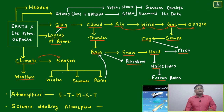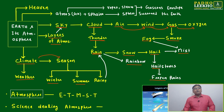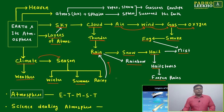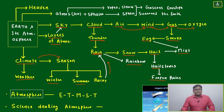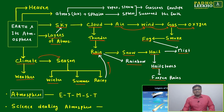What we feel from this atmosphere is, first, climate; next is weather; and another point is seasons. Seasons are mainly three types: winter, summer, and rainy. You are now getting connected back to rain. This is our understanding about the Earth and its atmosphere.